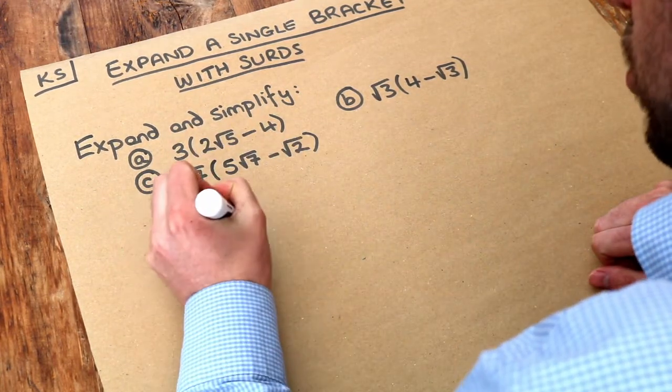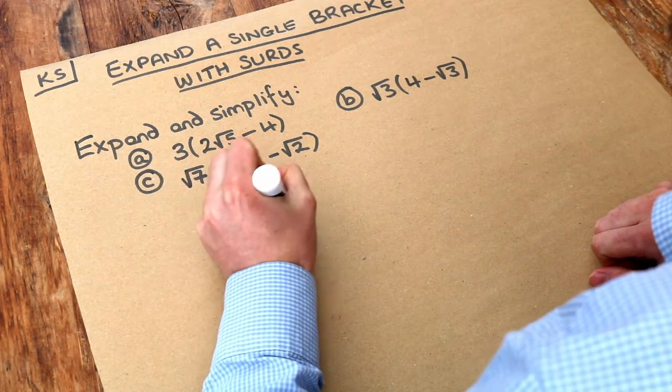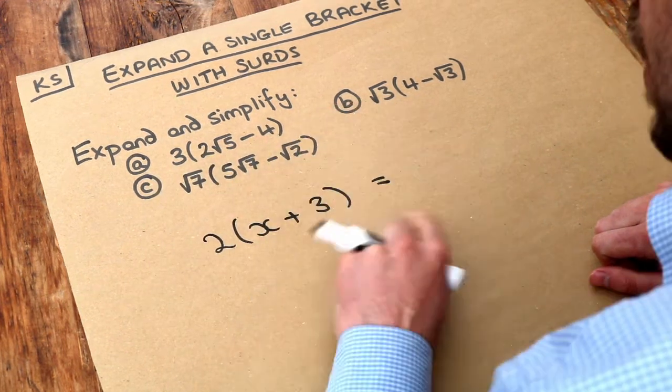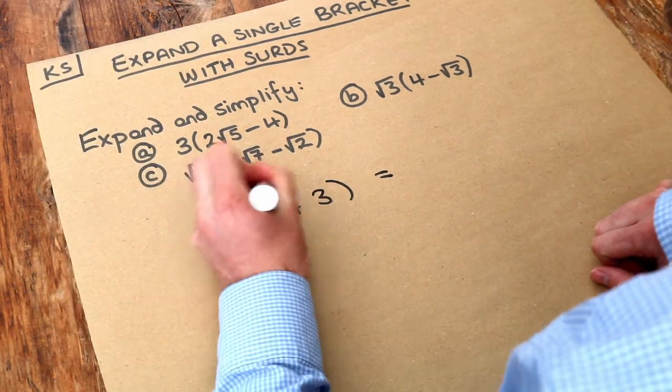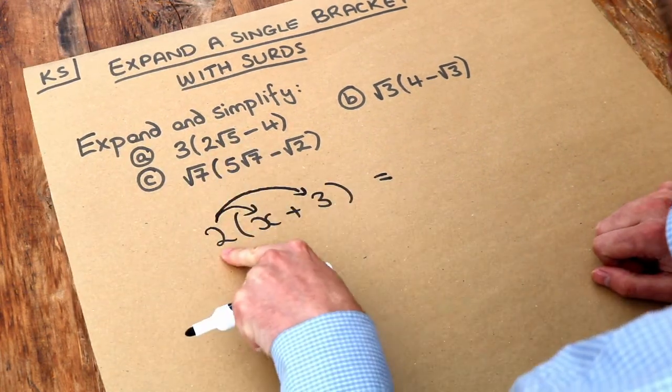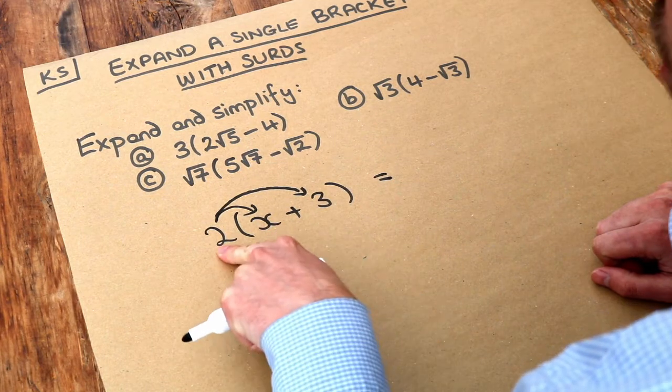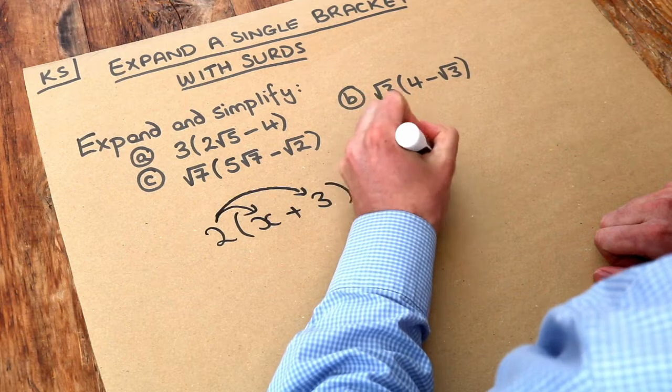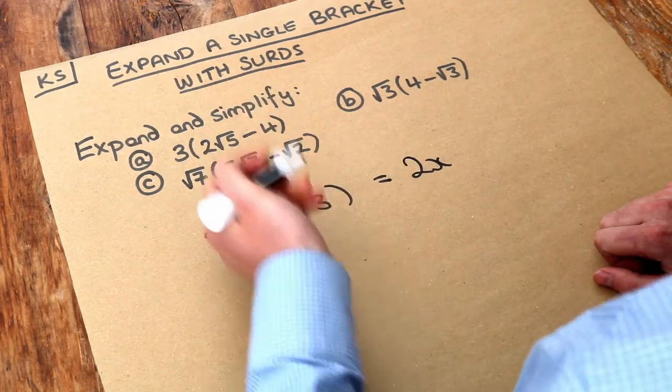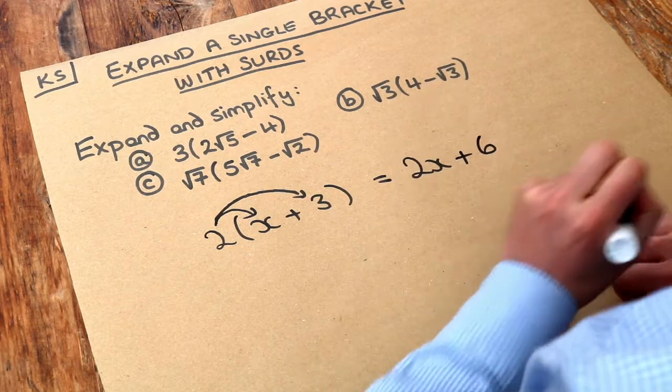If we had say 2 multiplied by x plus 3, then that thing in the front of the bracket we multiply by each of the things inside the bracket. So we do the 2 times the first thing in the bracket and the 2 times the second thing in the bracket. 2 times x is 2x and then 2 times 3 is plus 6. So we'd get that.